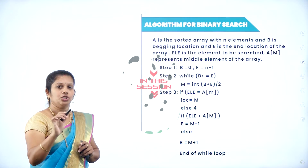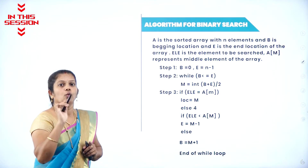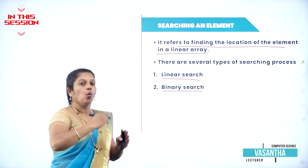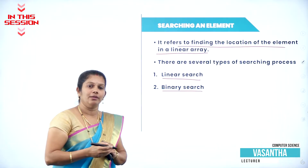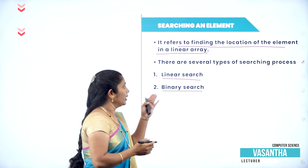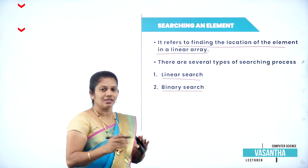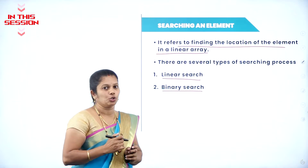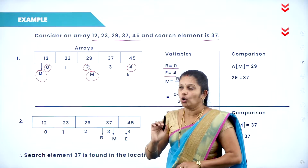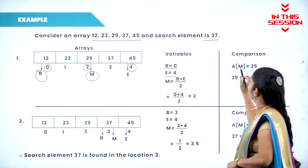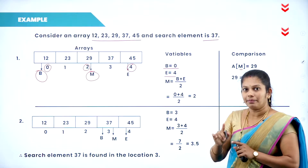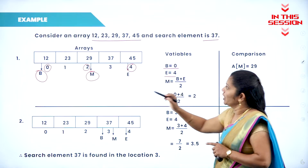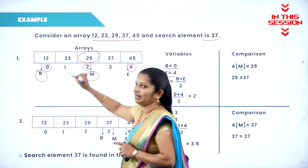In the algorithm, you must and should write which variables you are using. Linear search means one after another, all the elements are searched. Whereas in binary search, we divide the entire array into two parts and the searching process takes place. The comparison always takes place between the middle element, where M represents the middle and A of M represents the middle element.